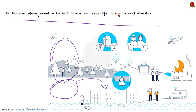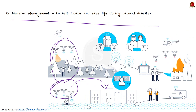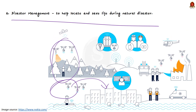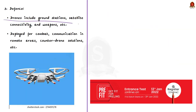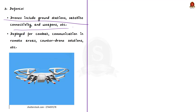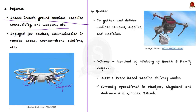Third, drones find use in the defense sector. Defense drones have complex systems including ground stations, satellite connectivity, and sometimes on-board weapons. They can be deployed for combat, communication in remote areas, and counter-drone solutions. Fourth, drones can be used to gather and deliver medical samples, supplies, and medicine to remote or unreached areas.